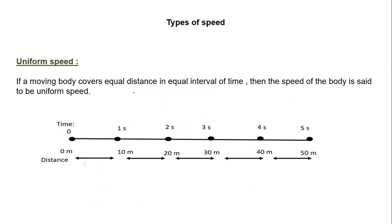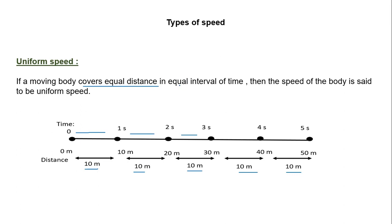Types of speed — uniform speed: in this figure it is shown that with time the distance is changing, and at equal interval of time (one second), the distance covered by the object is equal, 10 meters in all intervals. So if a moving body covers equal distance in equal interval of time, the speed of the object is said to be uniform speed.